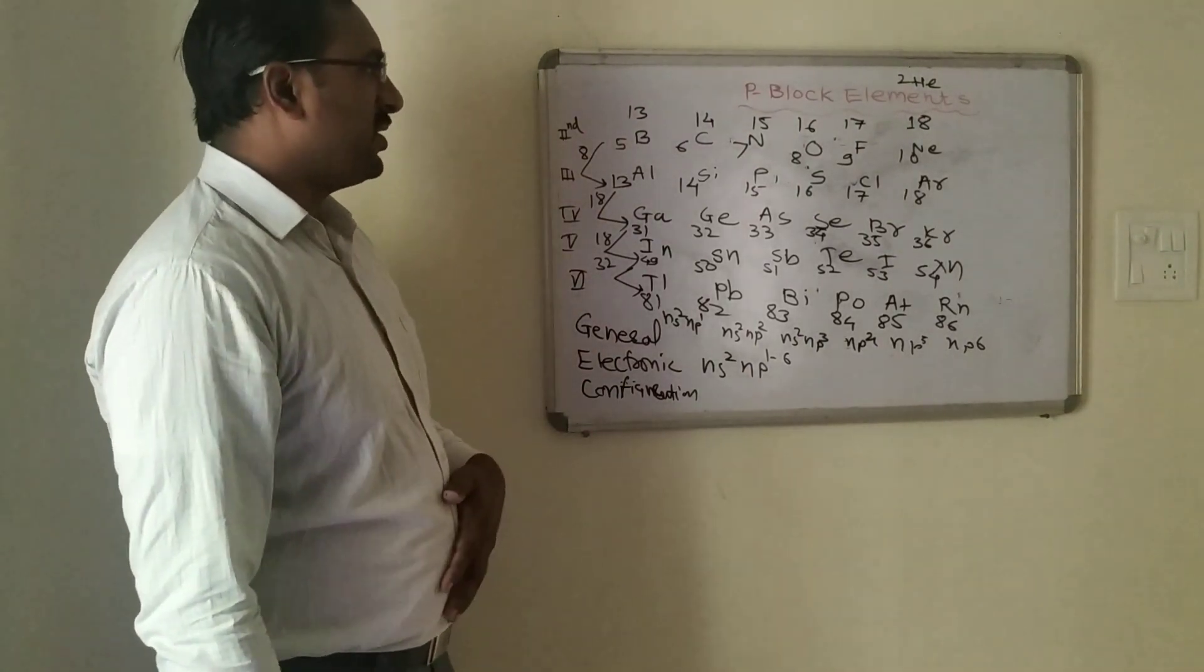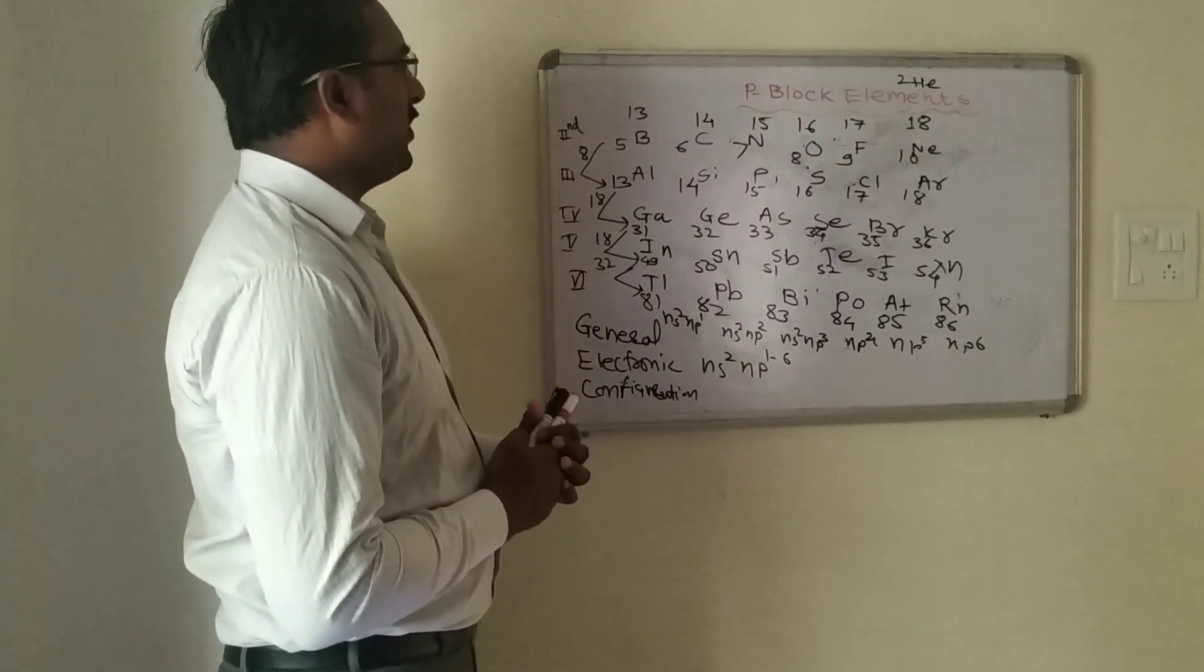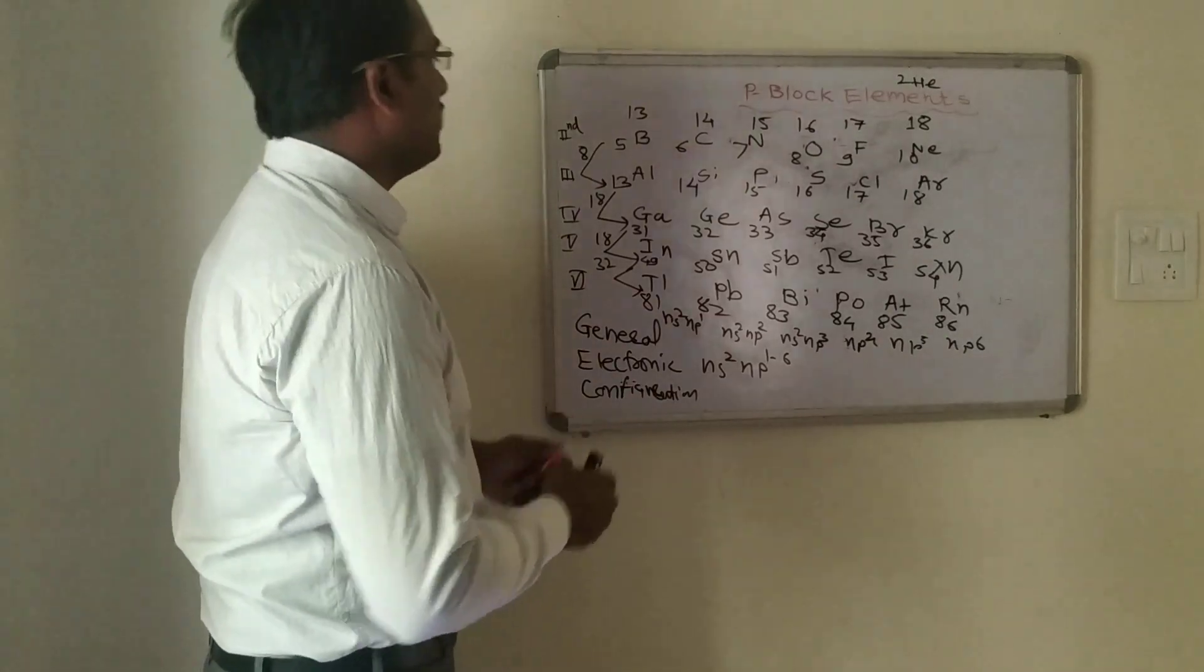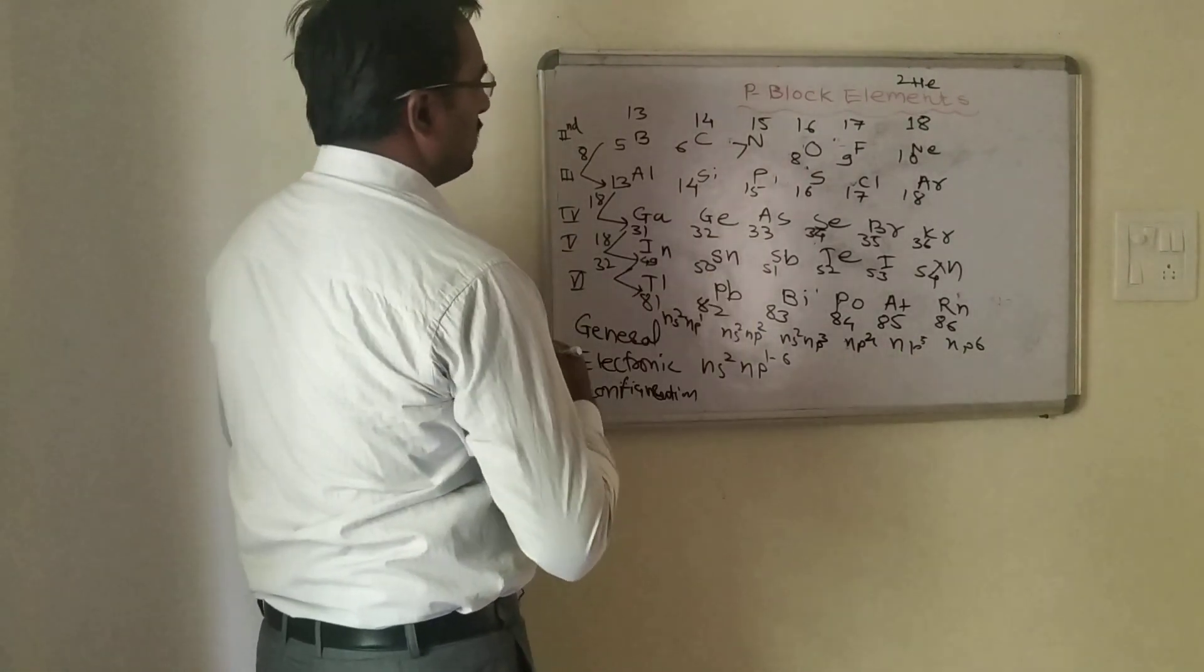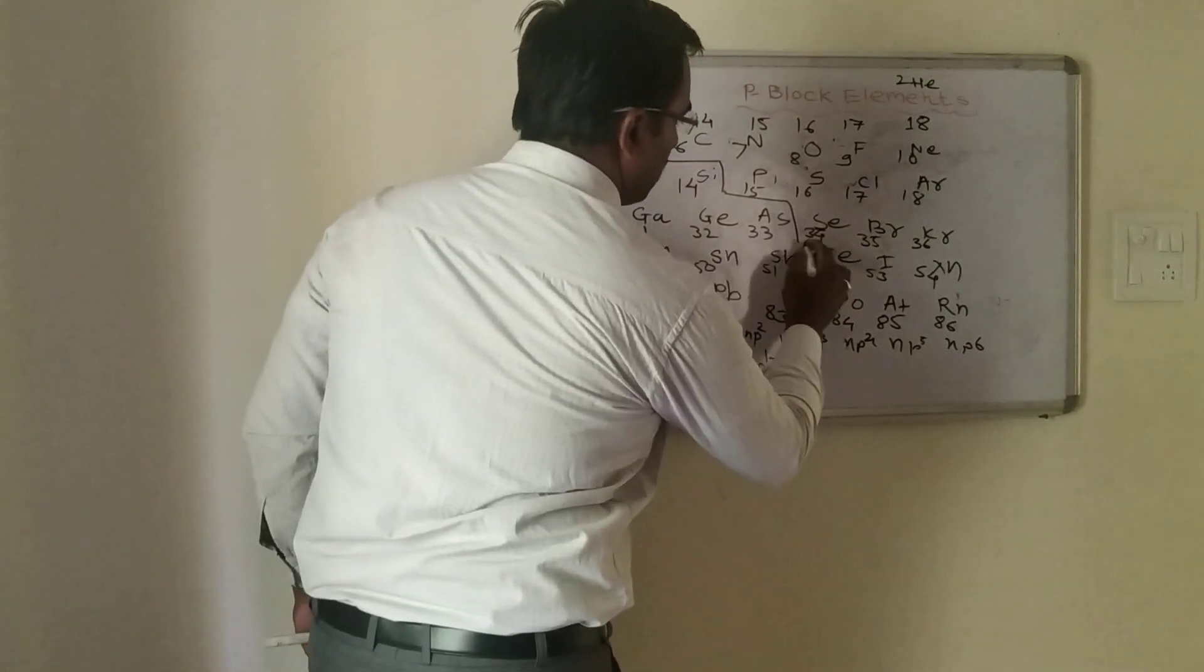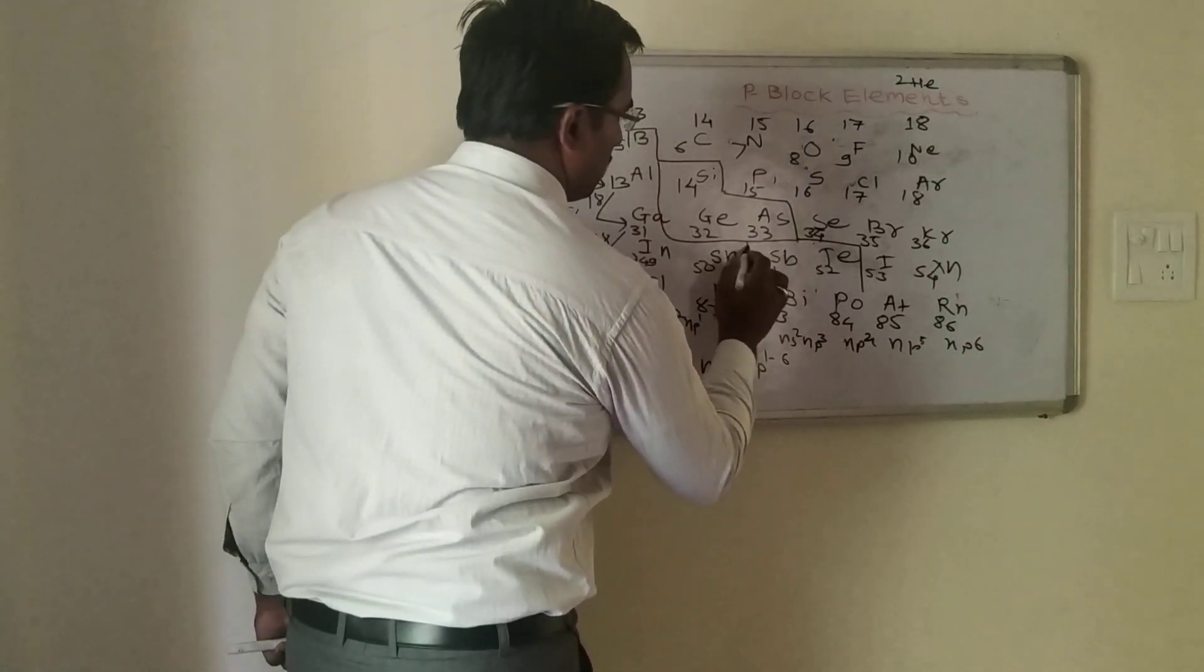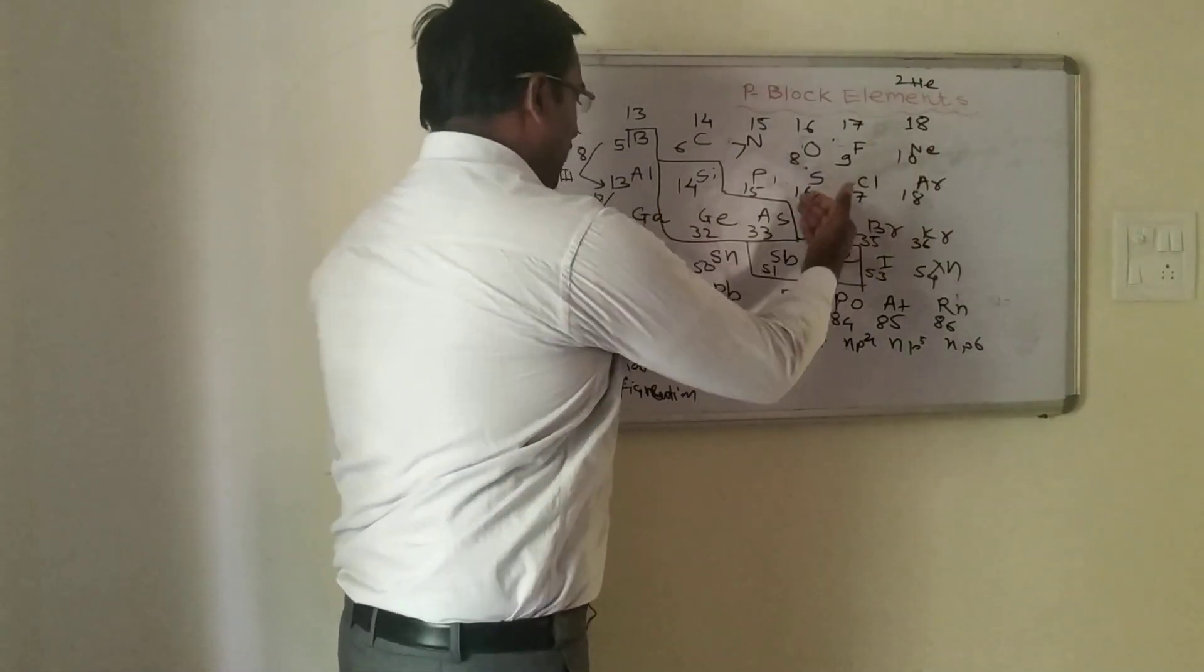Now we will have a brief discussion on the general periodic properties of these elements. The elements in the p-block include some metals, some non-metals, and metalloids. It is a highly diverse block. Boron is a non-metal, silicon is a metalloid, then arsenic. There is a diagonal shape separating metals from non-metals.